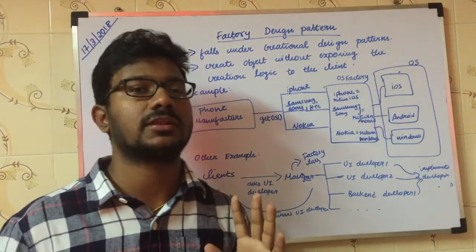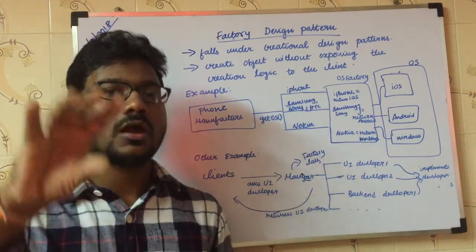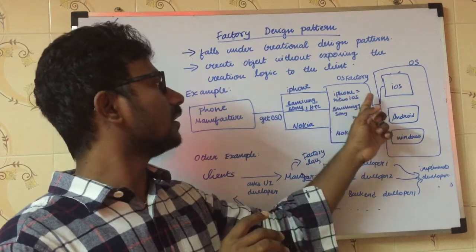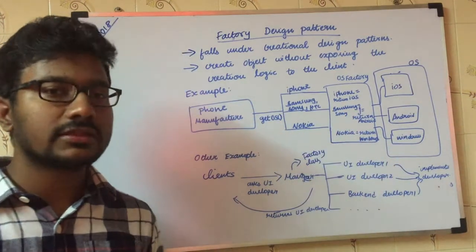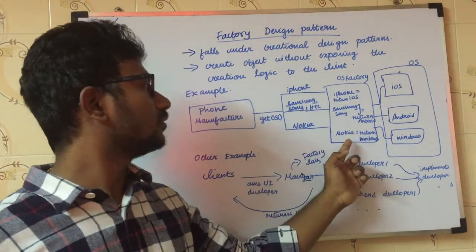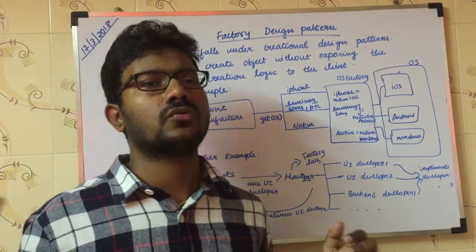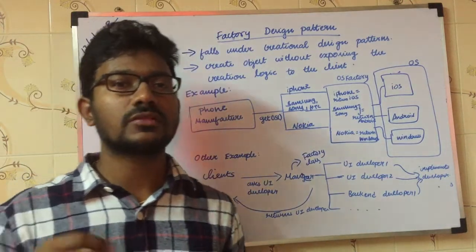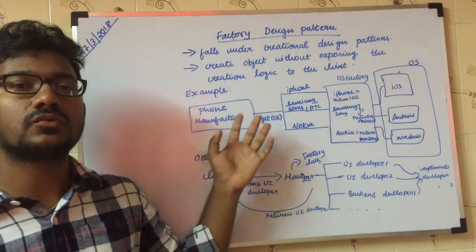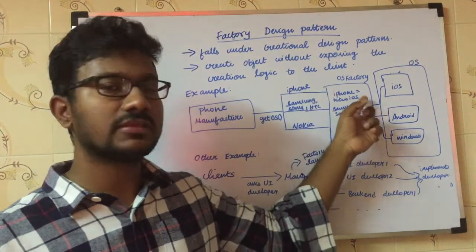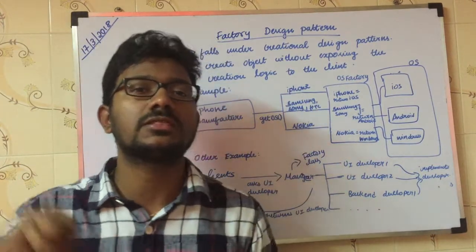What we are doing is the factory design pattern. Based on rules, we return the best object. So the input could be iPhone, Samsung, Sony, Nokia — and based on that input, we determine which OS object is best to use.